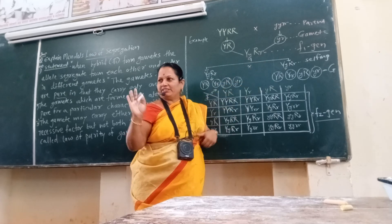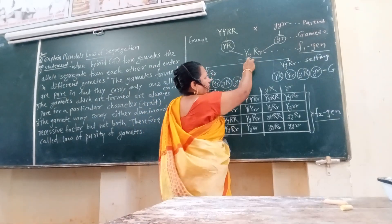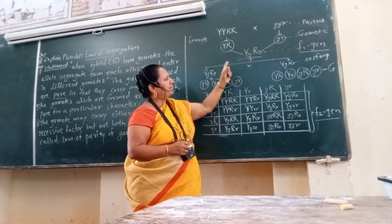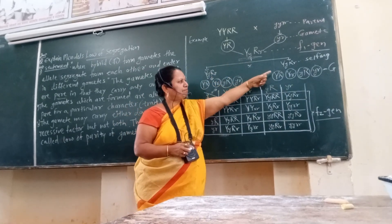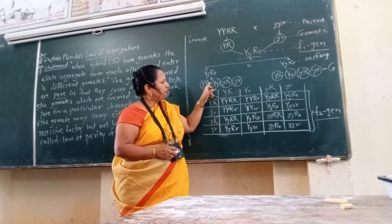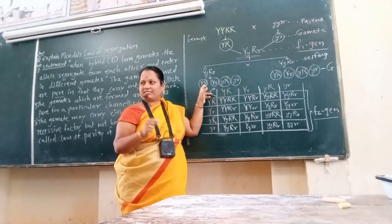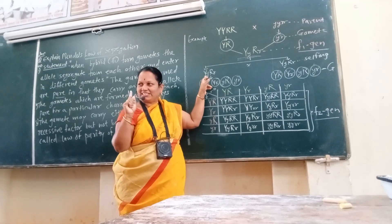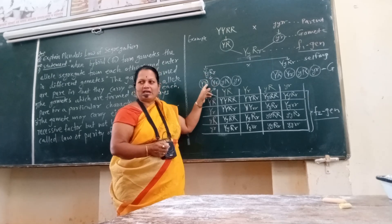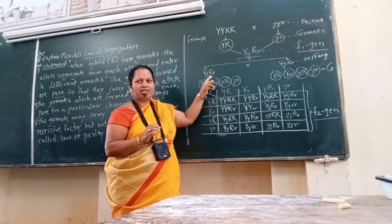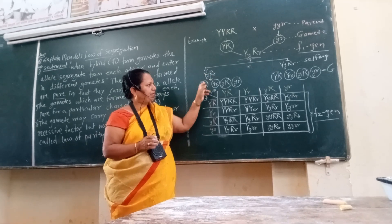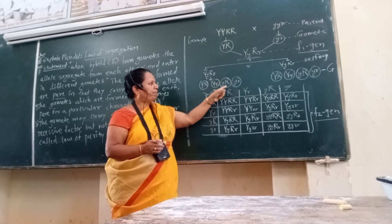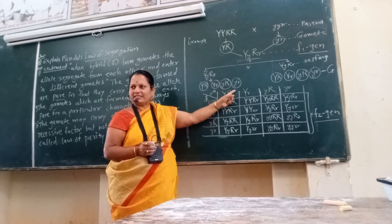The F1 generation is formed, and then from F1, gametes are produced. When two F1 hybrid plants cross, each F1 plant produces four types of gametes. Each gamete consists of single alleles: capital Y and capital R, not both. In the second gamete, capital Y and small r. In the third gamete, small y and capital R. And in the fourth gamete, small y and small r.